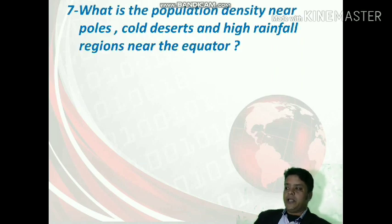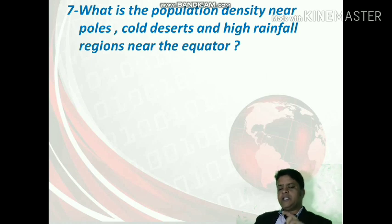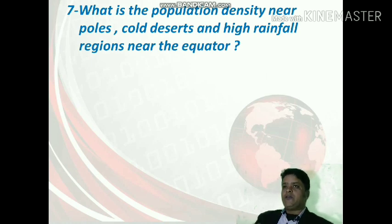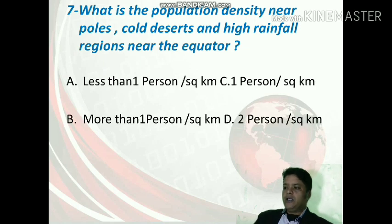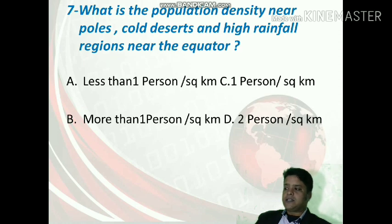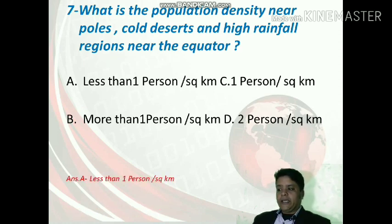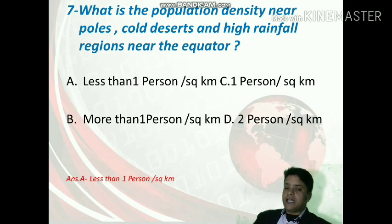What is the population density near the poles, cold deserts, and high rainfall regions near the equator? These are areas where the climate is very harsh and we expect low population. The options are less than 1, 1, more than 1, or 2 persons per square kilometer. Option A is correct — less than 1 person per square kilometer.